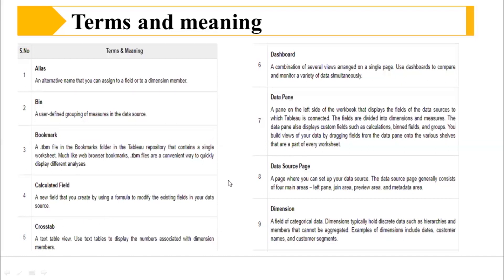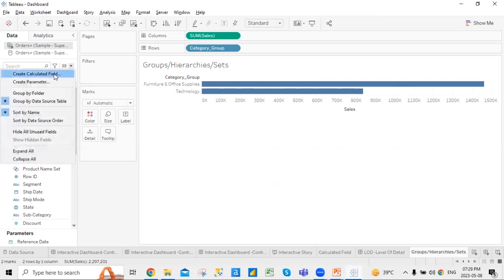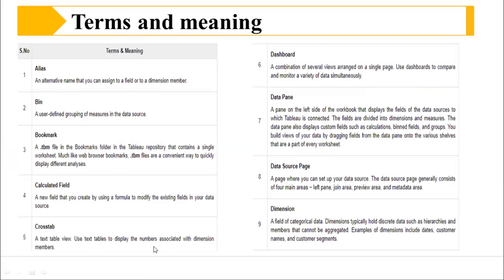Calculated fields are new fields that you create using a formula, or by modifying an existing field in your data source. The calculated field option is available from the data pane anchor. Then there's crosstab — if there is a chart created as a visual and you want to see that same visual presented as a table in text and number format, you use a crosstab. Crosstab helps you view that data as a text table, and that is called a crosstab view.